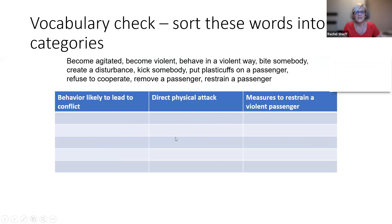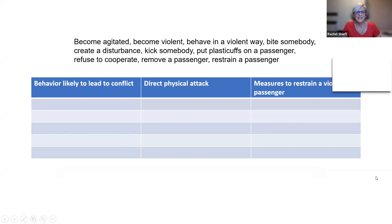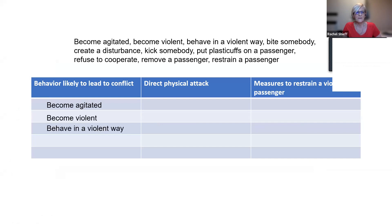So now we're going to sort these words into three categories: behaviour likely to lead to conflict, direct physical attack, or measures to restrain a violent passenger. Looking at behaviour likely to lead to conflict: become agitated, become violent, behave in a violent way, create a disturbance, refuse to cooperate.